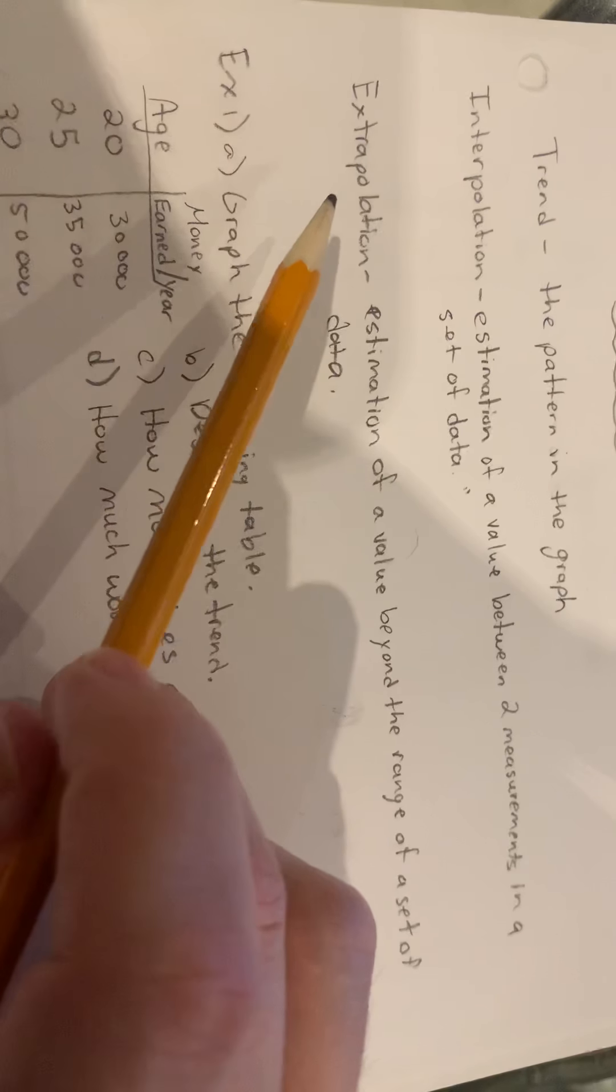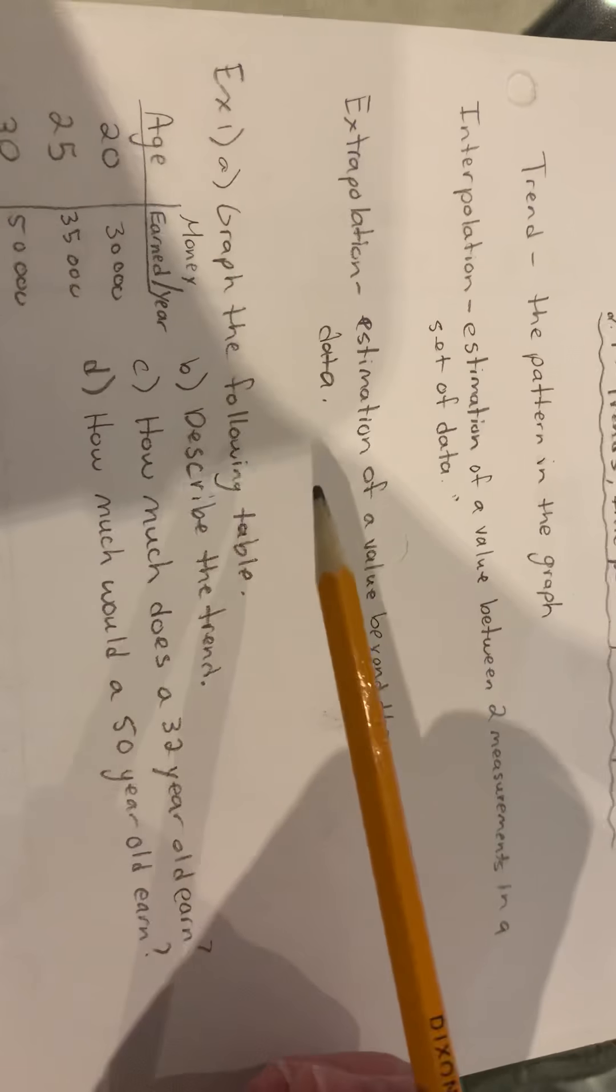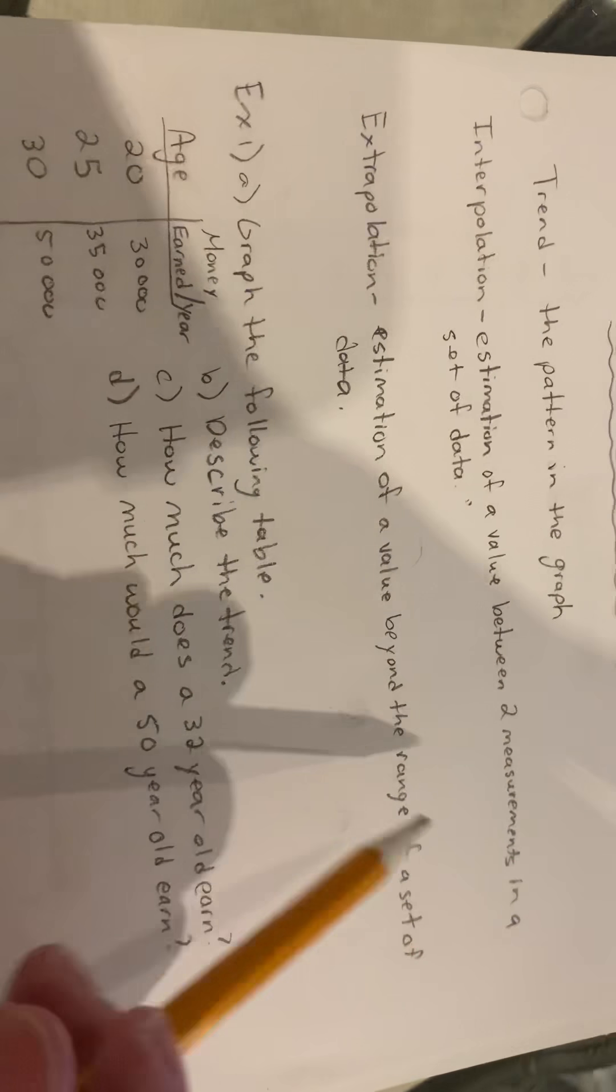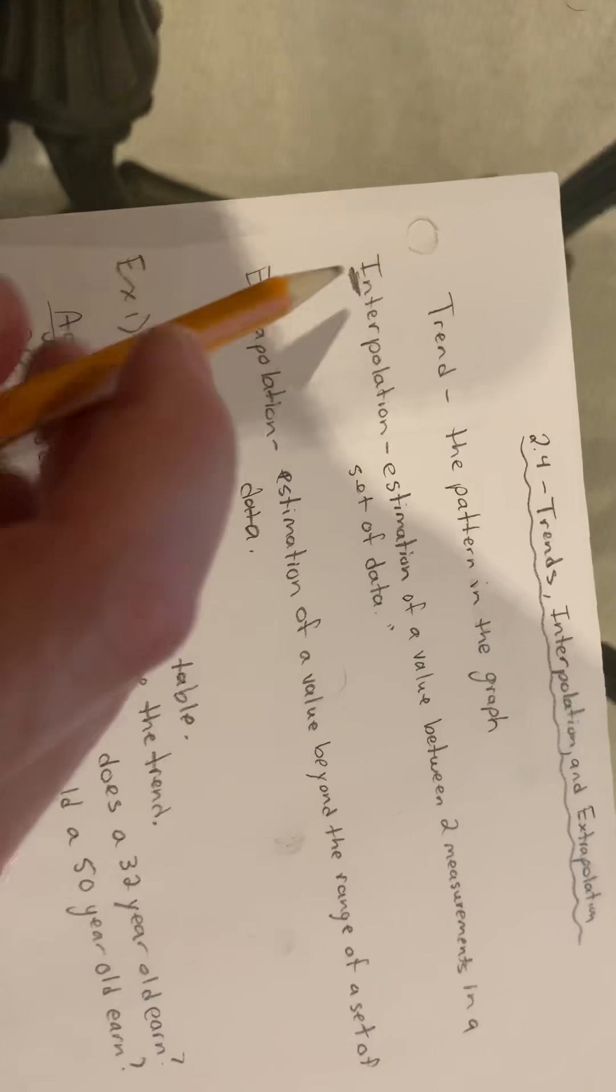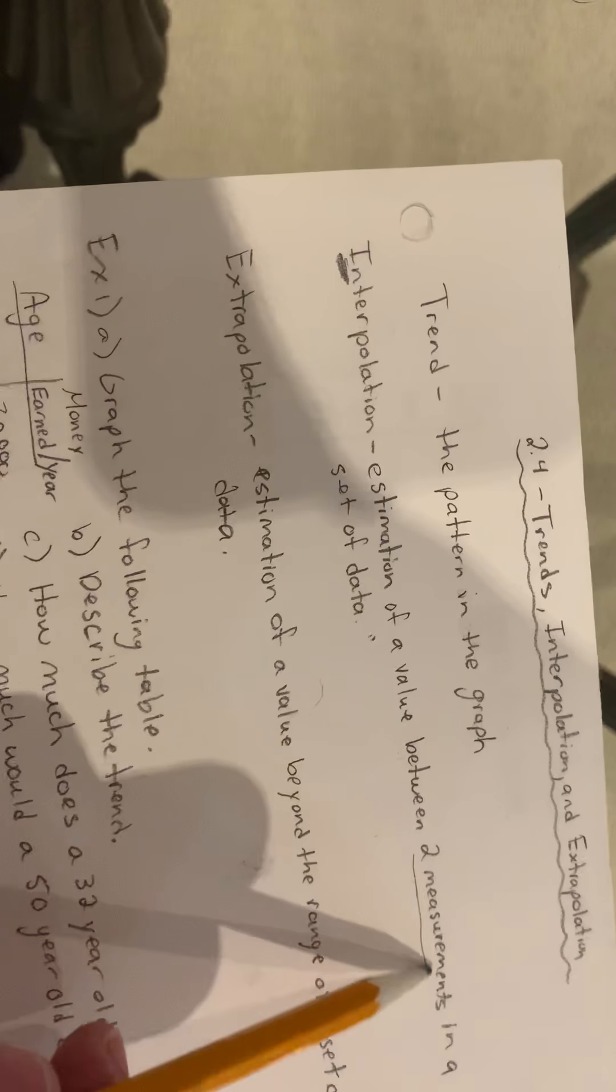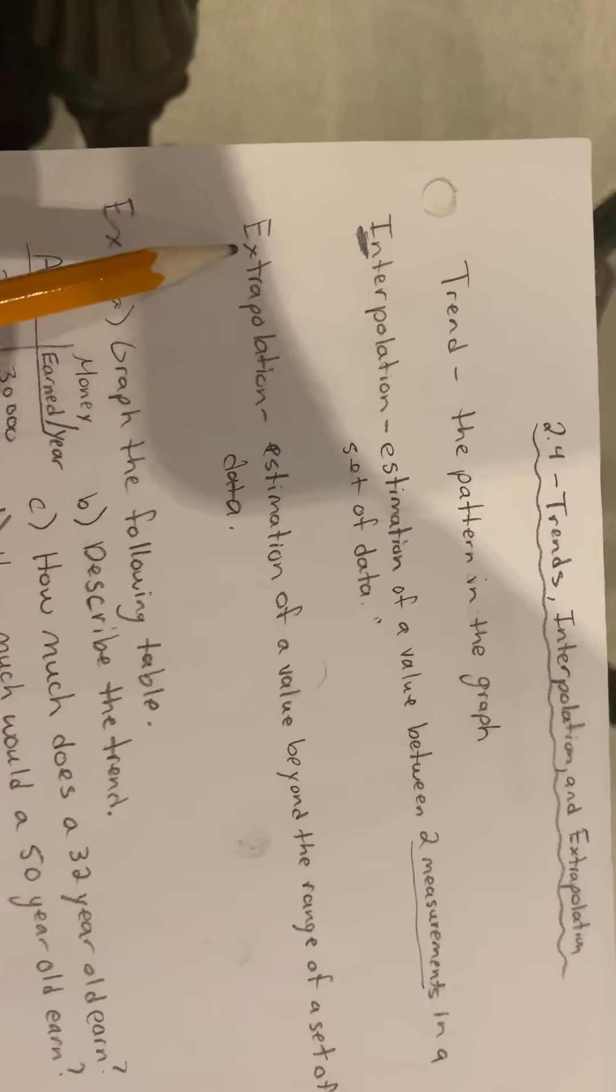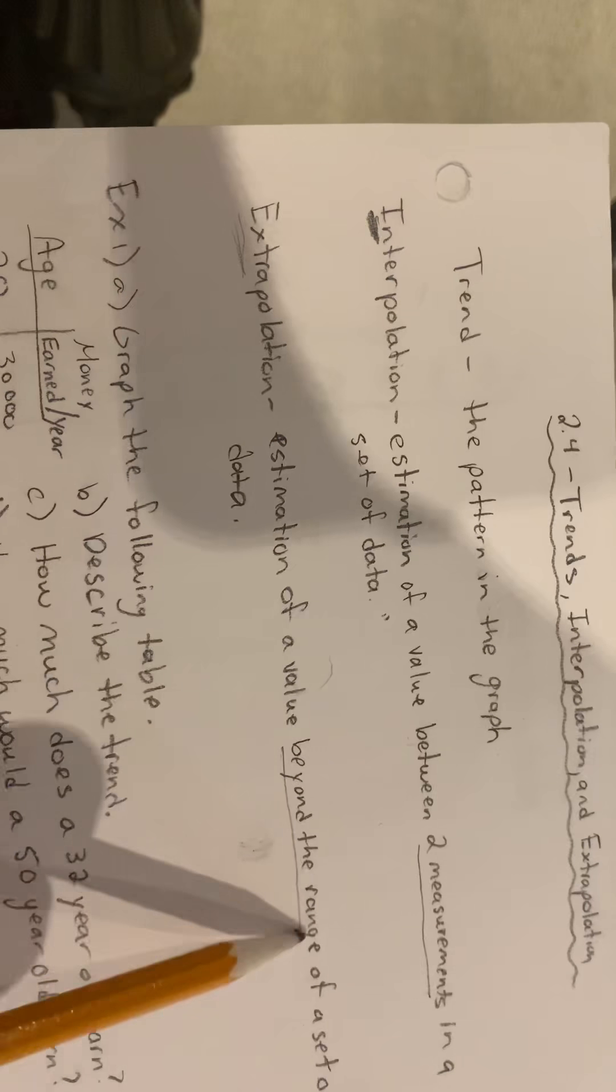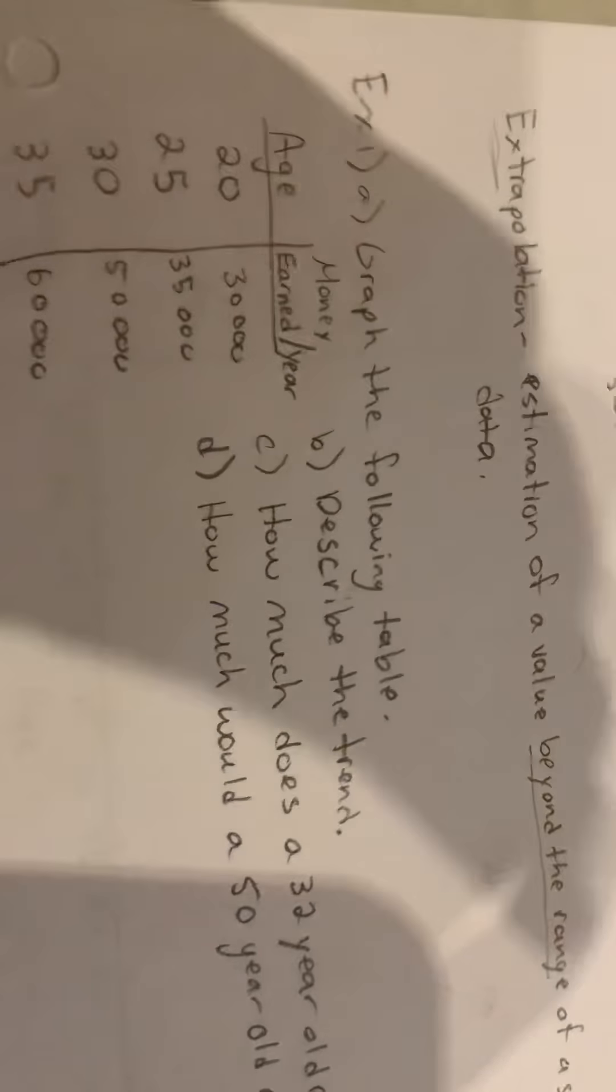Our next one is called extrapolation, and this is an estimation of a value beyond the range of a set of data. So just some key things here: interpolation is inside, within two measurements. Then we have extrapolation, which is kind of an extra, it's beyond the range of a set of data.